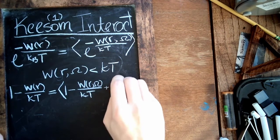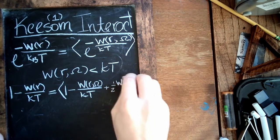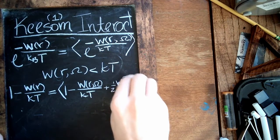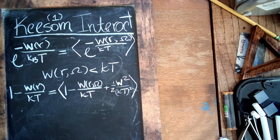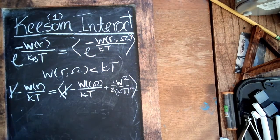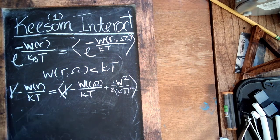Plus we'll go to second order over here: one-half W squared over kT also squared.